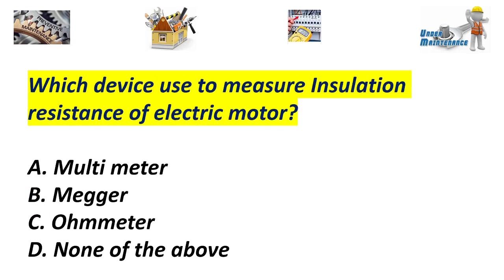This device is used to measure insulation resistance of an electric motor. A. Multimeter. B. Meager. C. O-meter. D. None of the above. Answer: B. Meager.